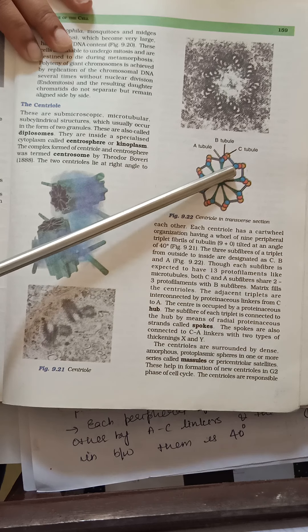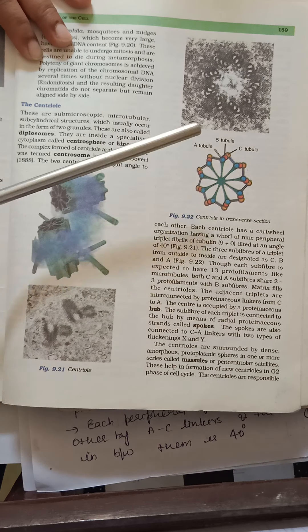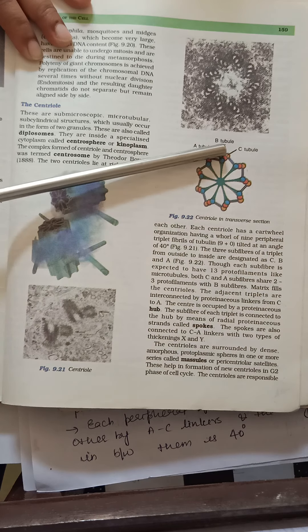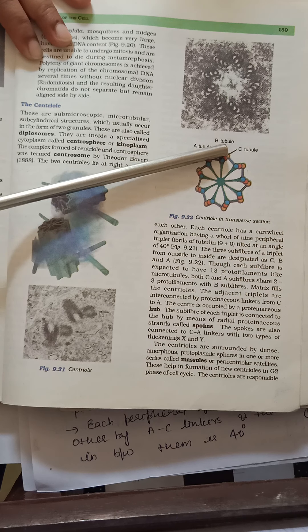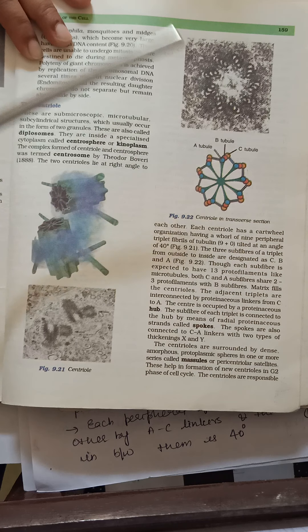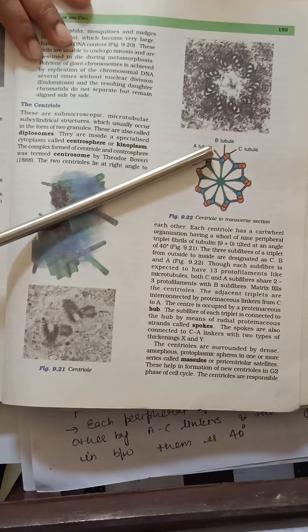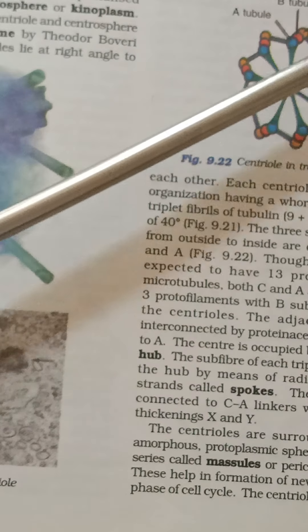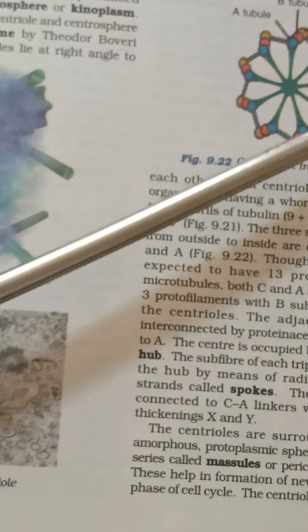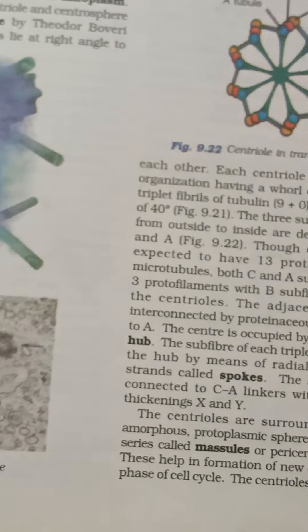The A tubule of one triplet is linked with the C tubule of the adjacent triplet via an AC linker. This is the diagram of the centriole showing 9 triplet fibers: 1, 2, 3, 4, 5, 6, 7, 8, 9.